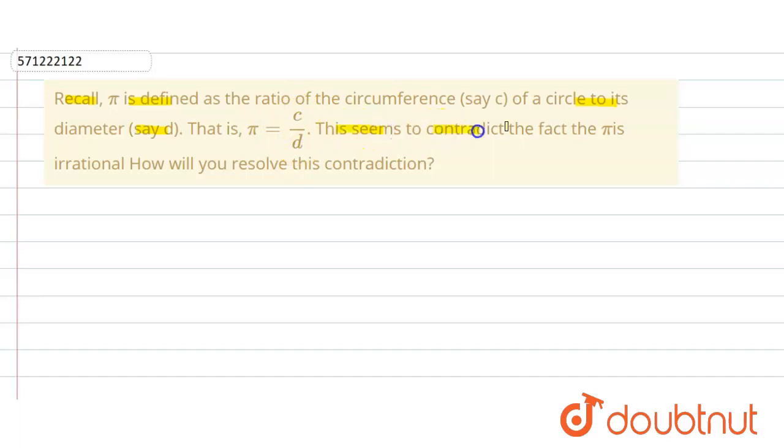This seems to contradict the fact that π is irrational. How will you resolve this contradiction?